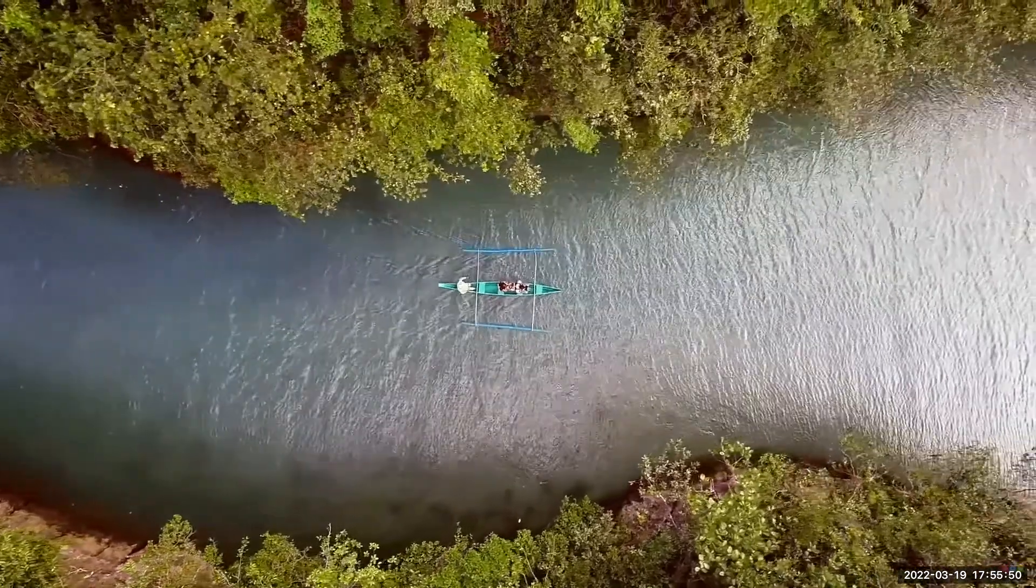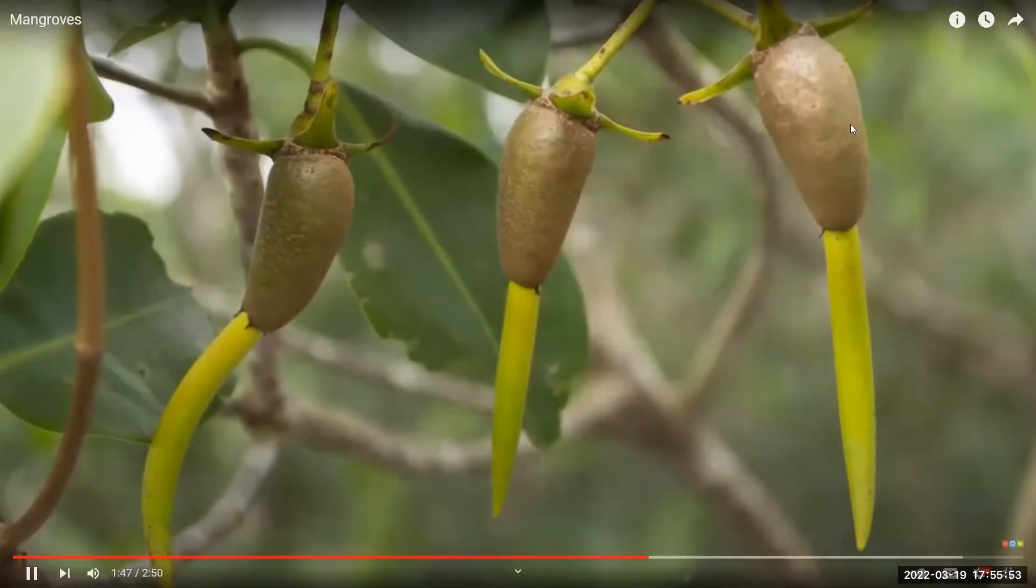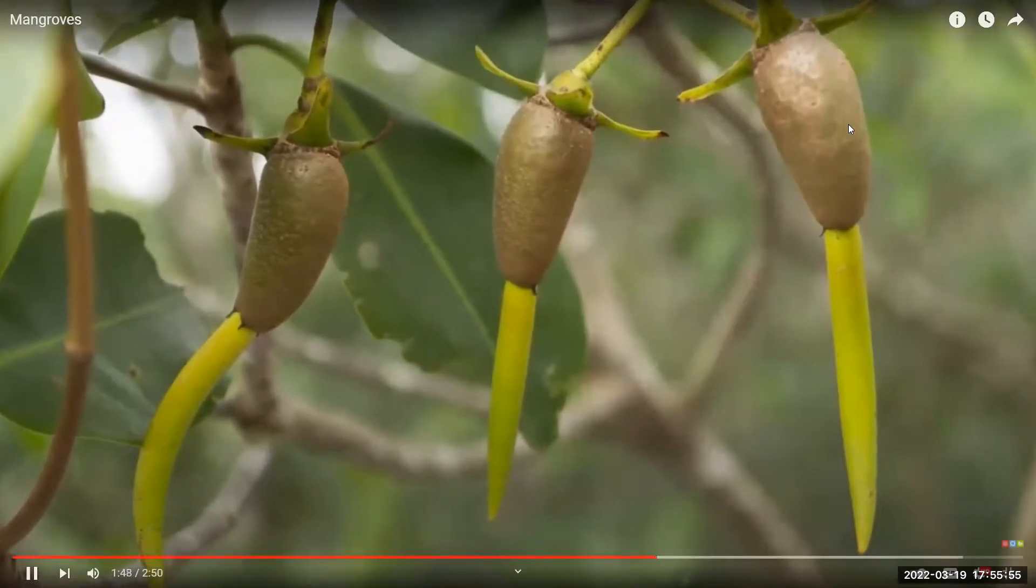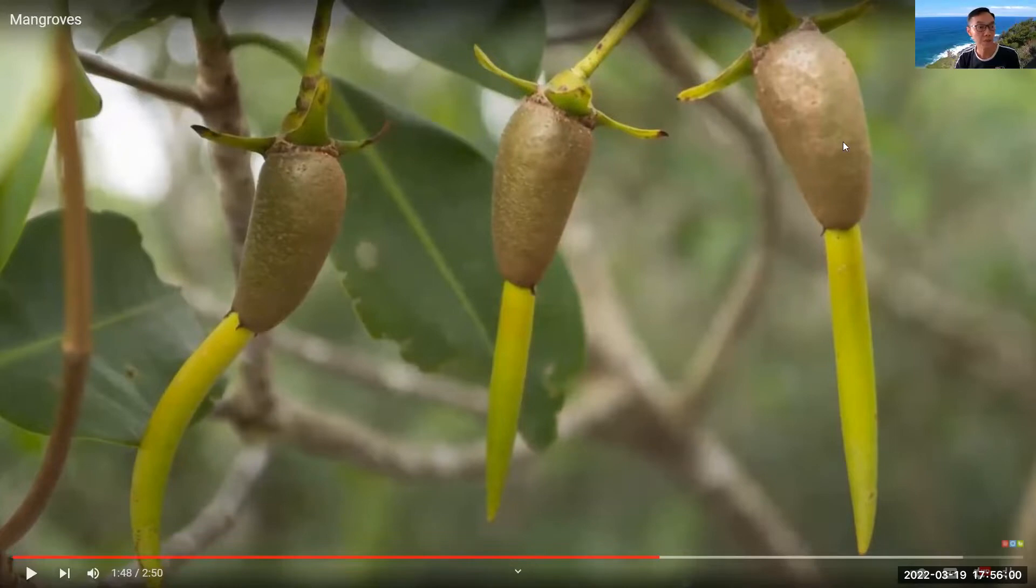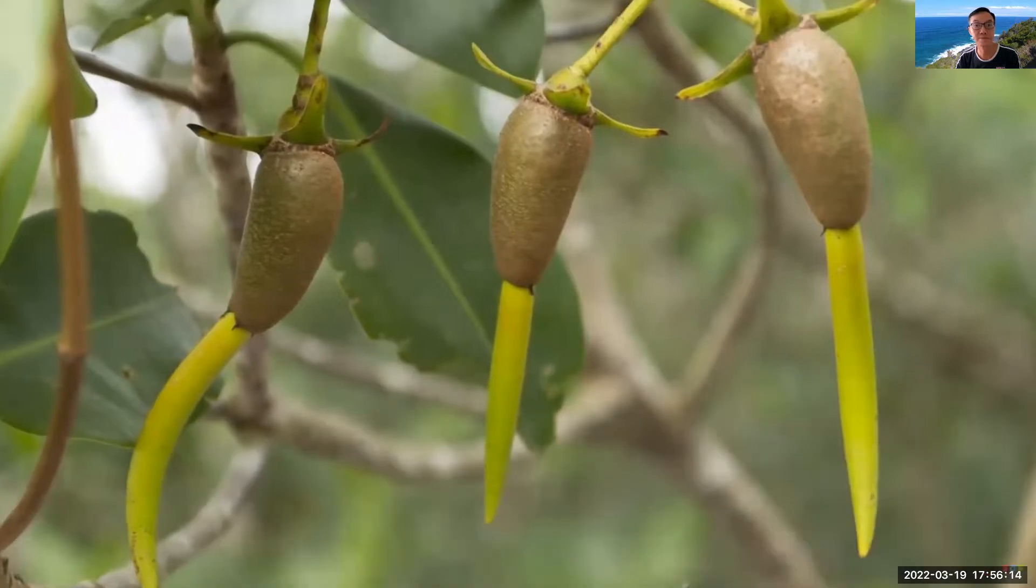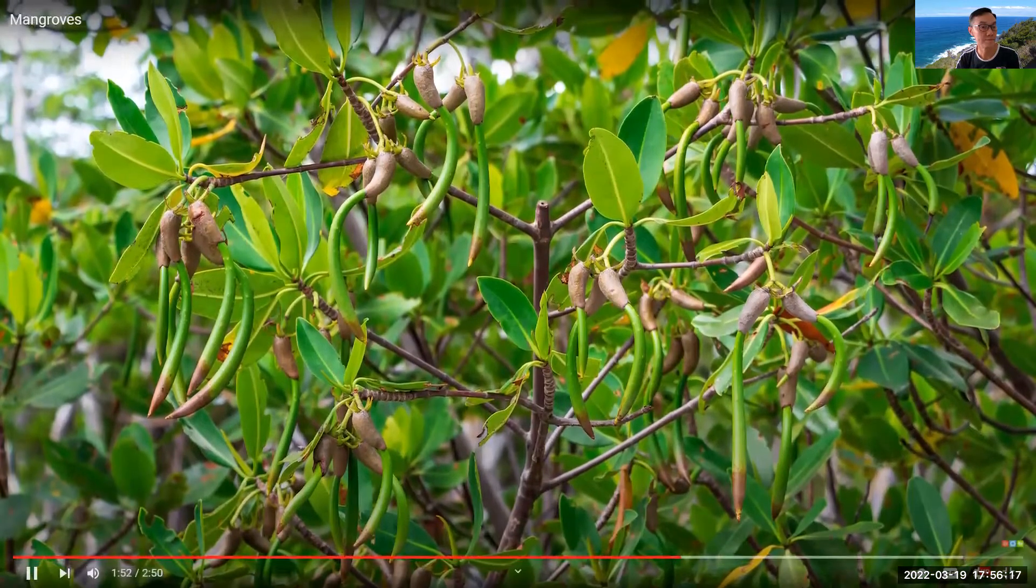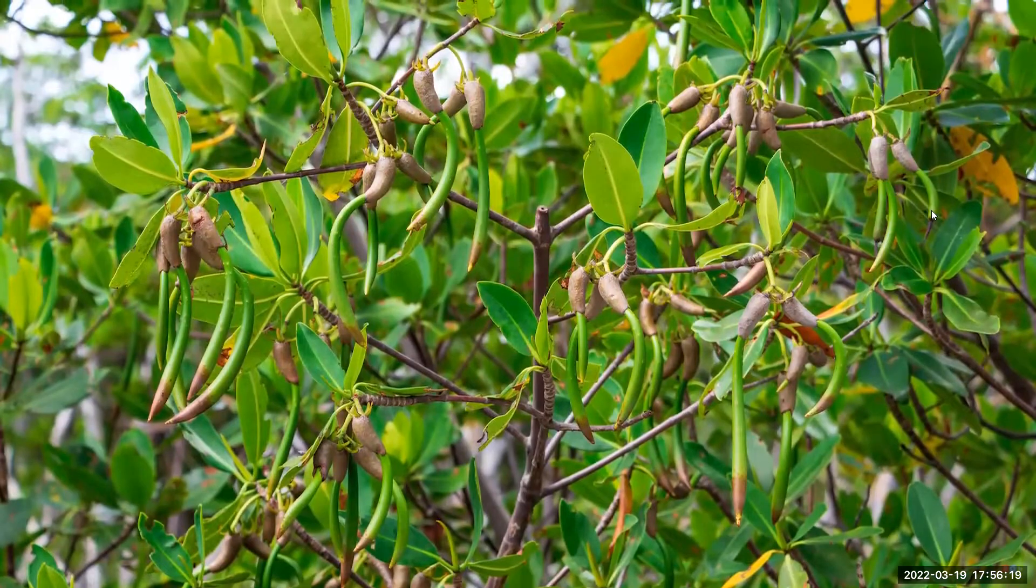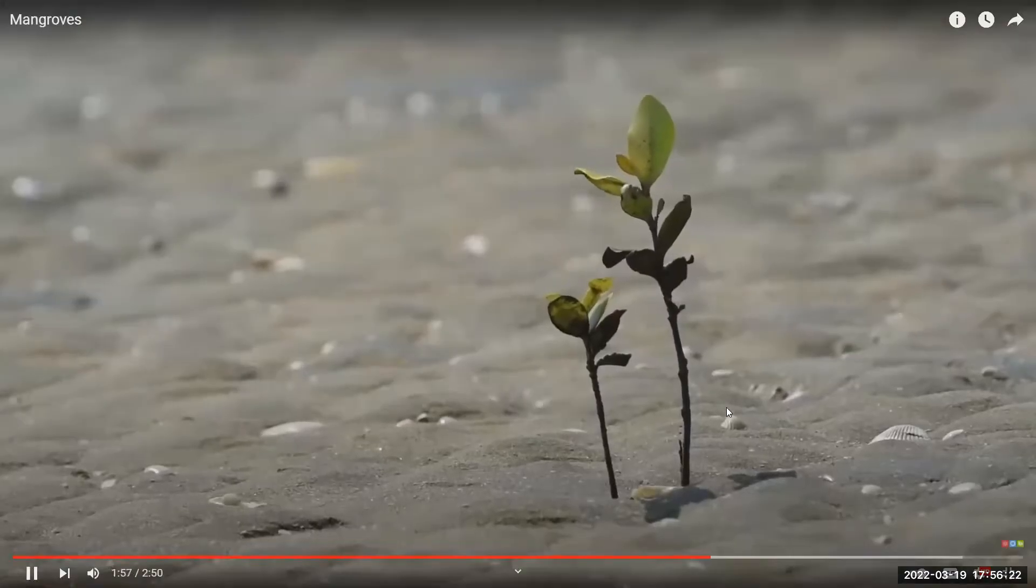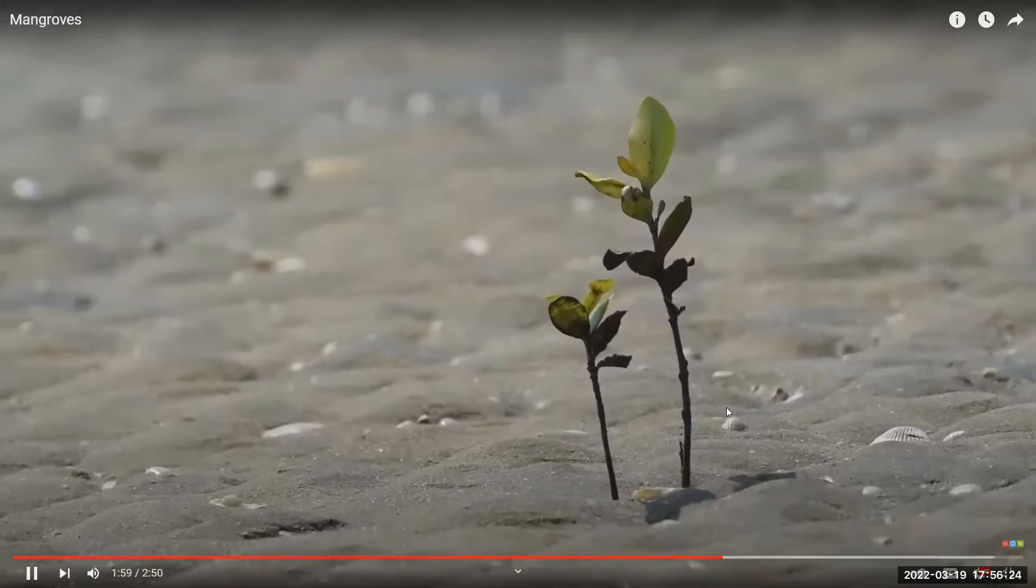The seeds of many mangroves germinate and begin to grow whilst still attached to the parent plants. These are actually the seeds of a mangrove and they started to germinate on the parent plant. This will relate to the question later—they ask you to choose which is a possible shape of the mangrove seed. Once developed, the seedling falls away. The seedlings float and are dispersed to new places by the tidal flow of water.